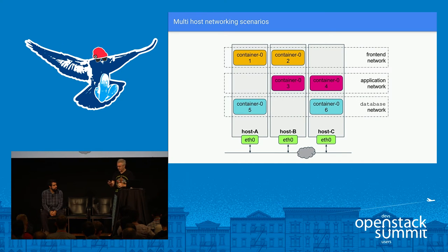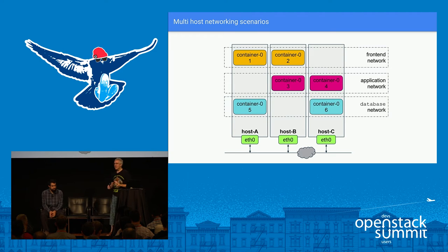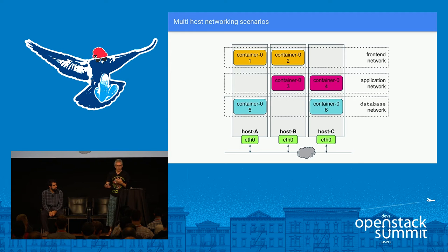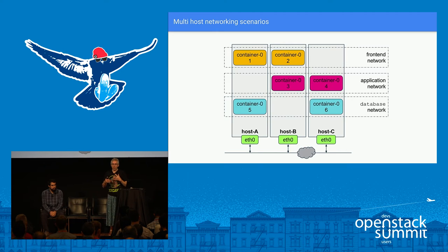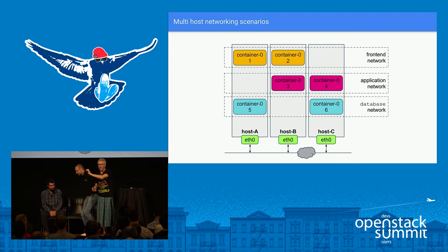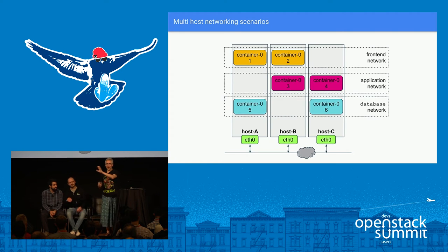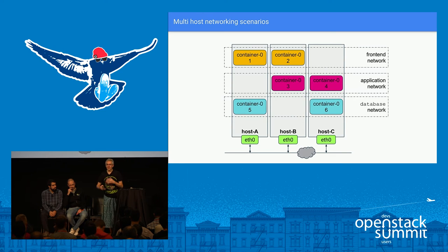That's overlay networking in a nutshell. It comes at a cost: you have to encapsulate and decapsulate packets all the time, there's a performance cost, a slight complexity cost, a cost in terms of MTU — needing to know what's going on with your MTU — and it's a bit more difficult to troubleshoot, because in different parts of the fabric you need to look for the packet in a slightly different form because it will be wrapped up.